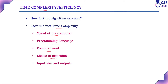There are different algorithms to solve the same problem, so the choice of algorithm also affects efficiency. Next is input size and the output — these are the different factors that affect the time complexity. The first three factors — speed of the computer, programming language, and compilers used — are not a programmer's choice; programmers cannot control these. The next two factors — choice of algorithm and input size — are under the programmer's direct control.